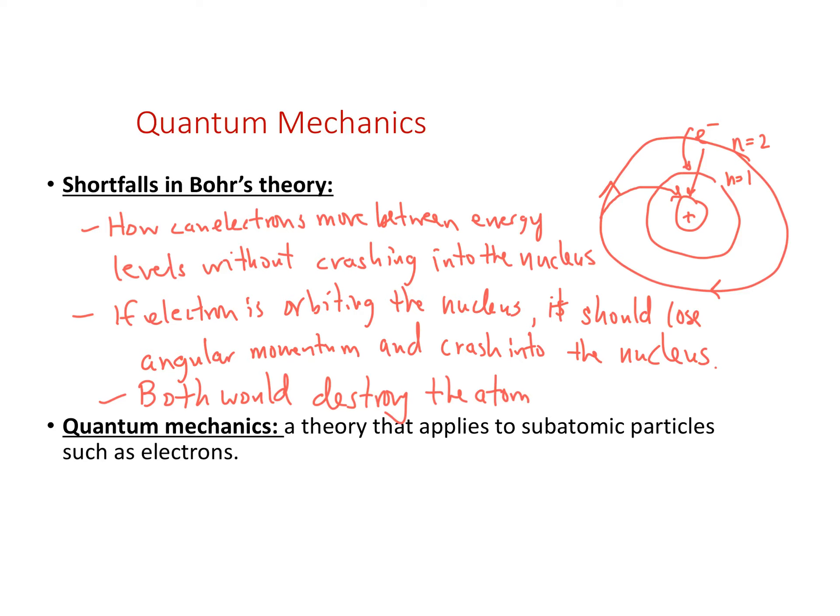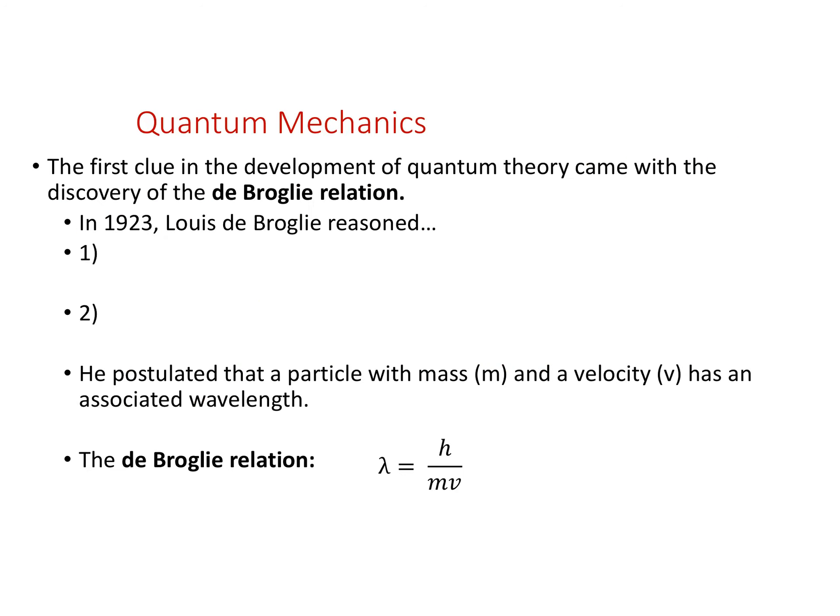Quantum mechanics is what came along in the early 1930s to help explain the theory that applies to atomic particles such as electrons. This is a really interesting time in the field — big names like Einstein, Max Planck, and Bohr were all working on this problem.